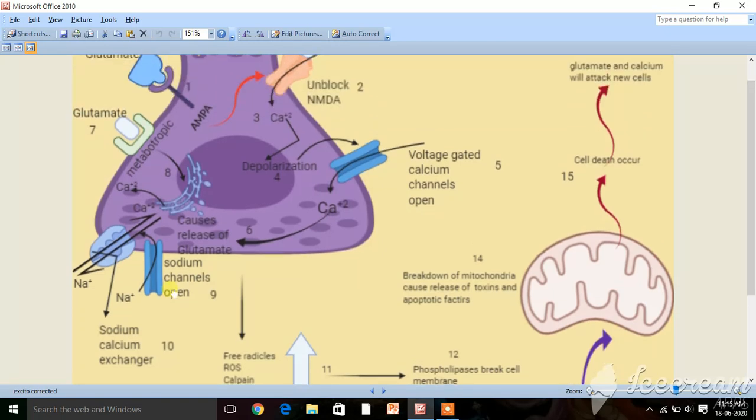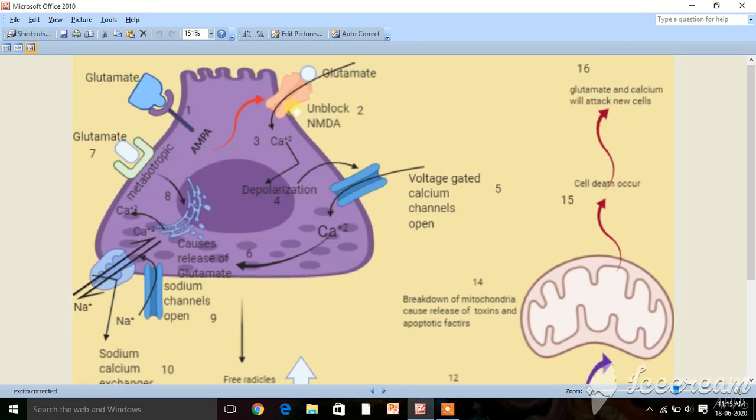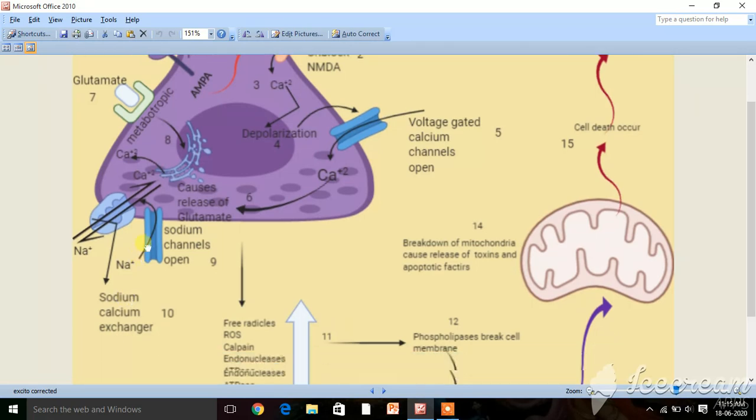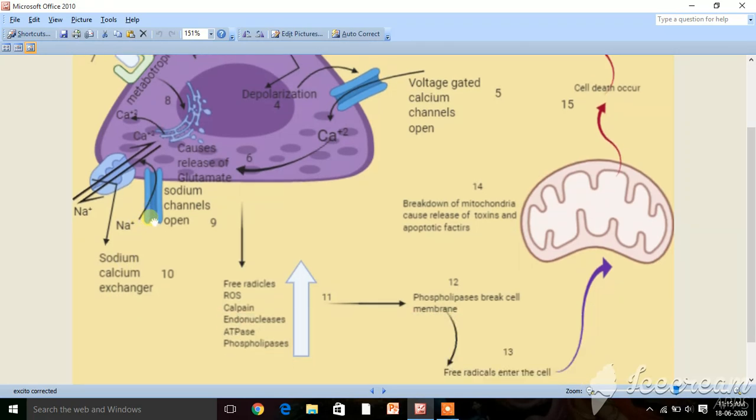Due to all these processes—as you can see, the first from NMDA receptors, the second from voltage-gated calcium channels, the third from endoplasmic reticulum, and the fourth from the sodium-calcium exchanger—a lot of calcium load occurs in the neuron, due to which the level of free radicals increases, reactive oxygen species increase, calpain increases, endonucleases increase, ATPases increase, and phospholipases increase.